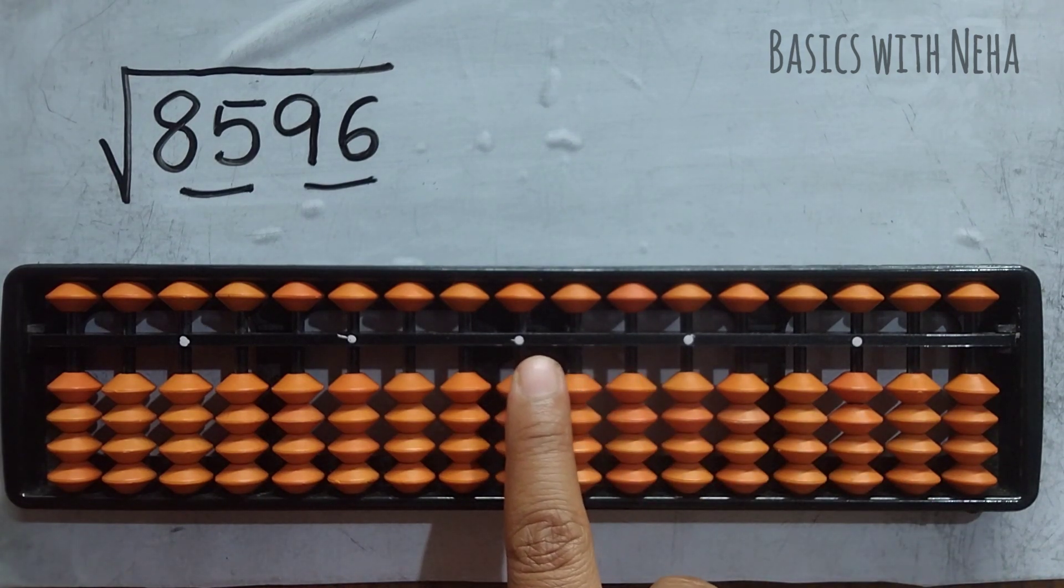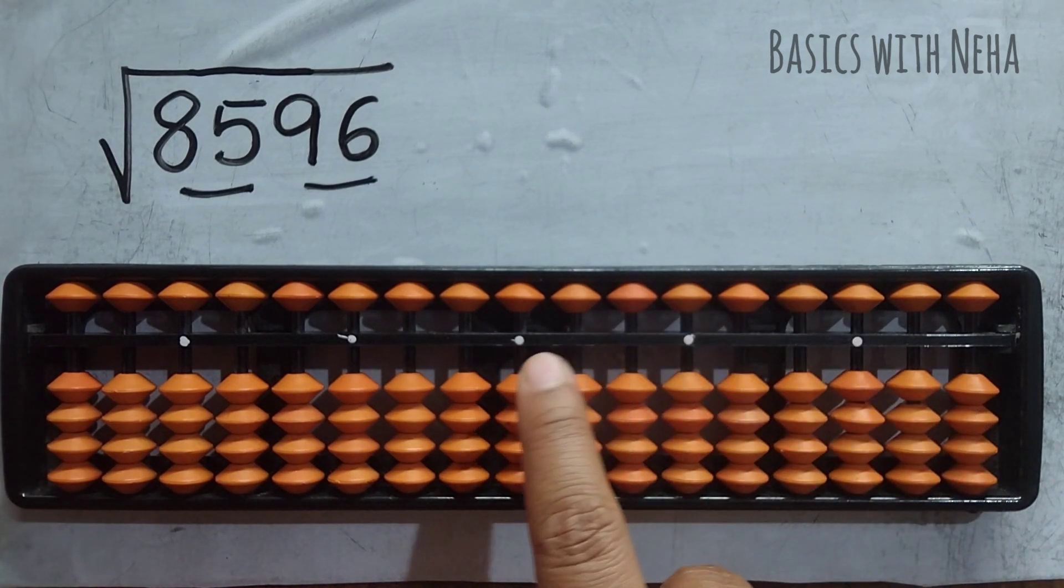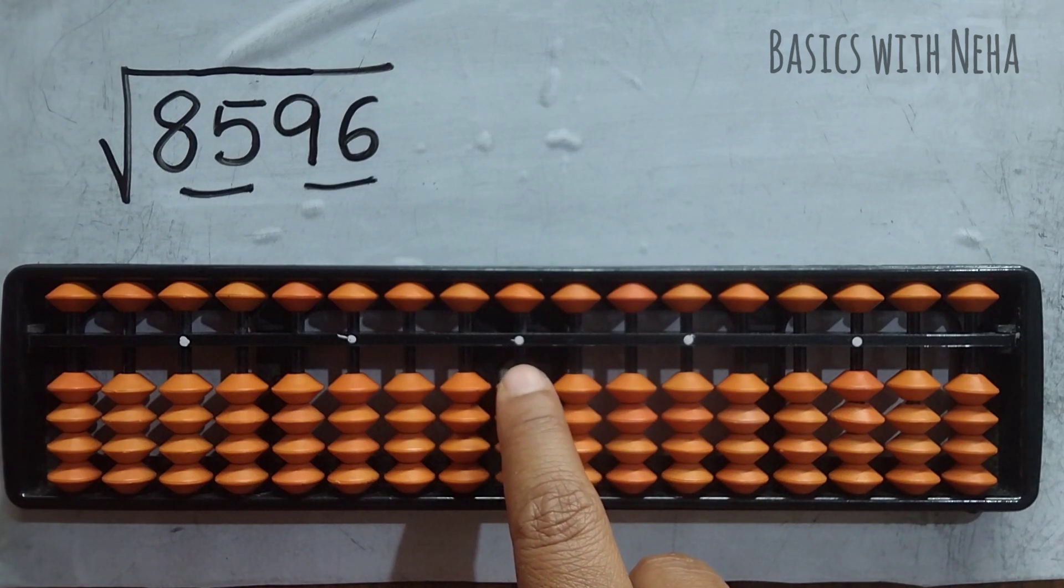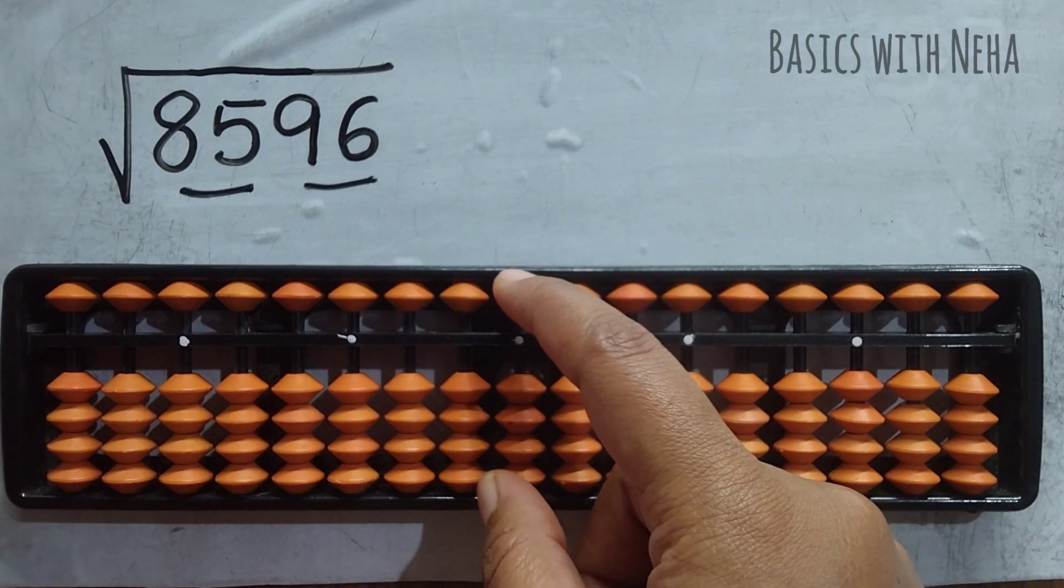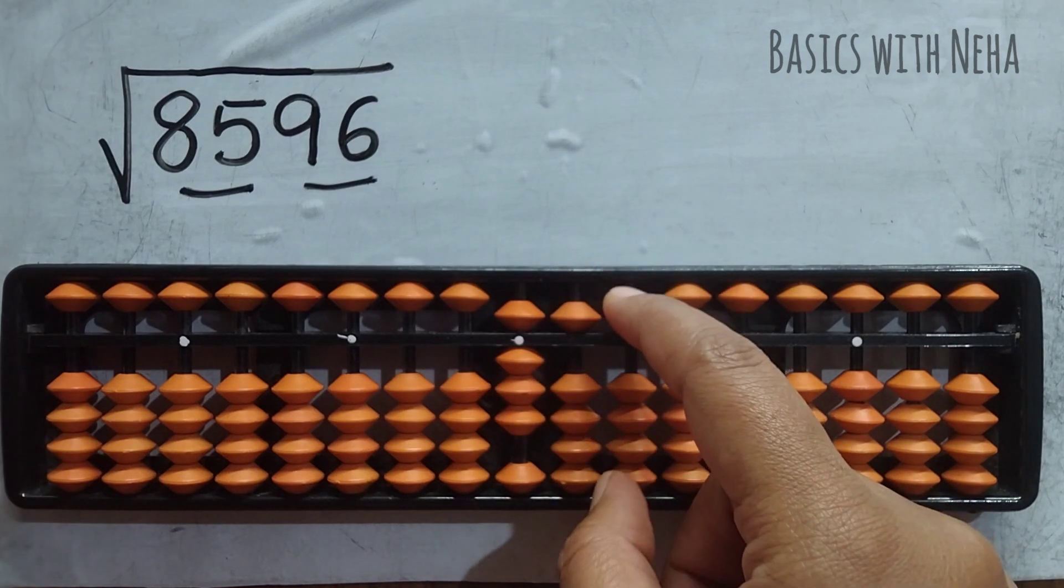I'll place it from here. You can place anywhere. I'll place it from here because I want at least two decimal places. I know it's an imperfect square number. So I'll place 8, 5, 9, 6.